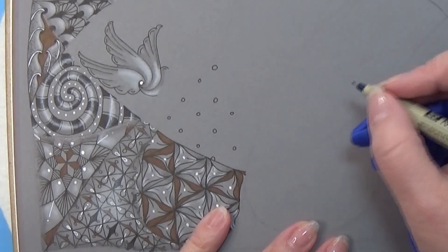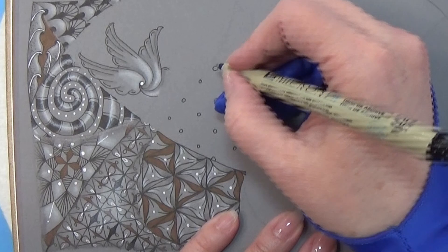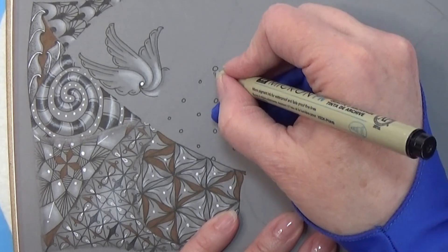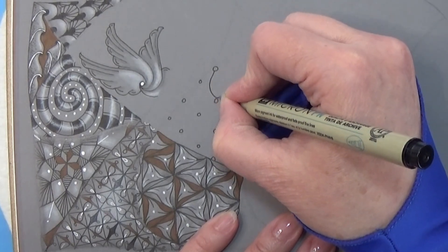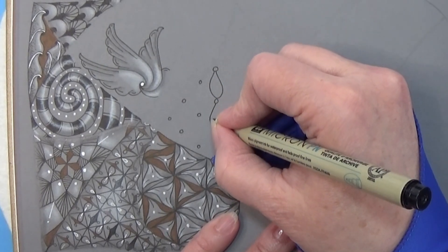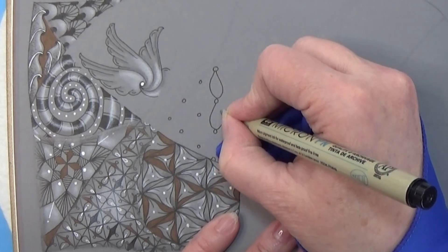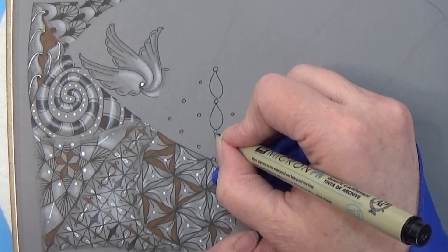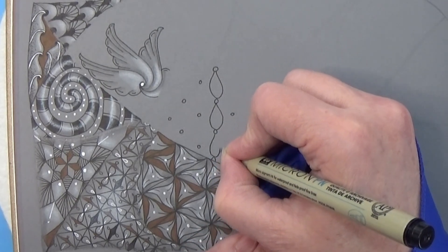And then from one orb to the next orb I am kind of making this teardrop and it's kind of hitting the next orb, starting on one orb and hitting the next.